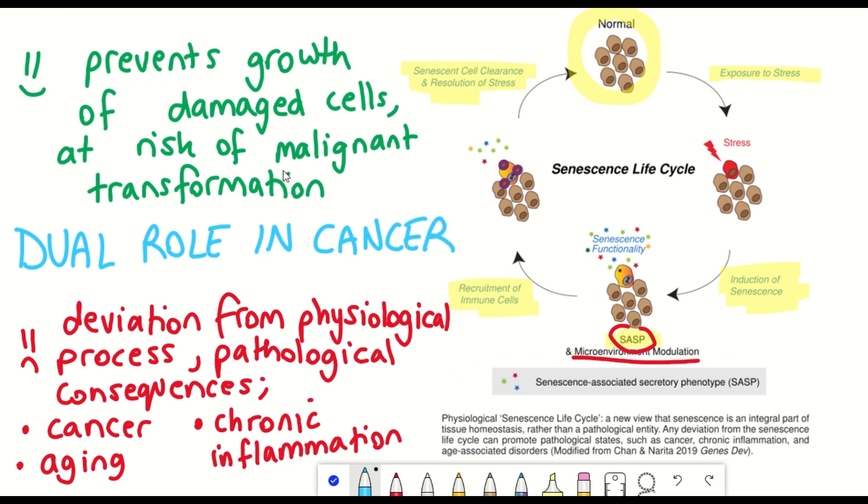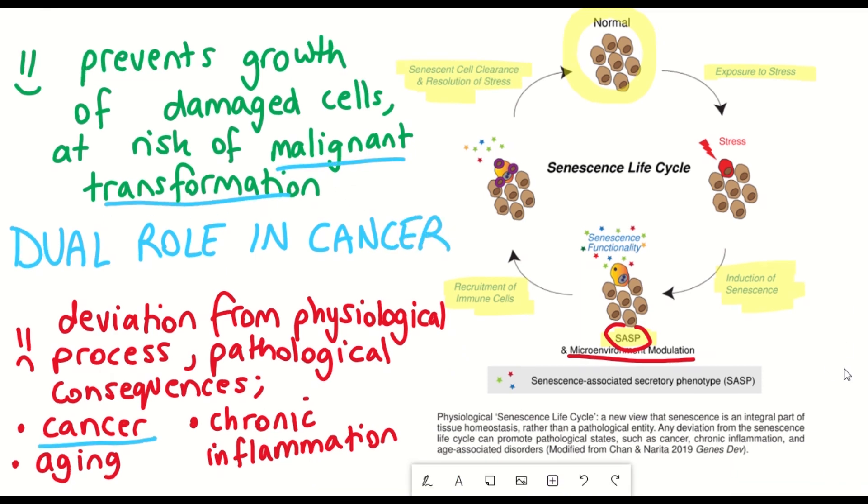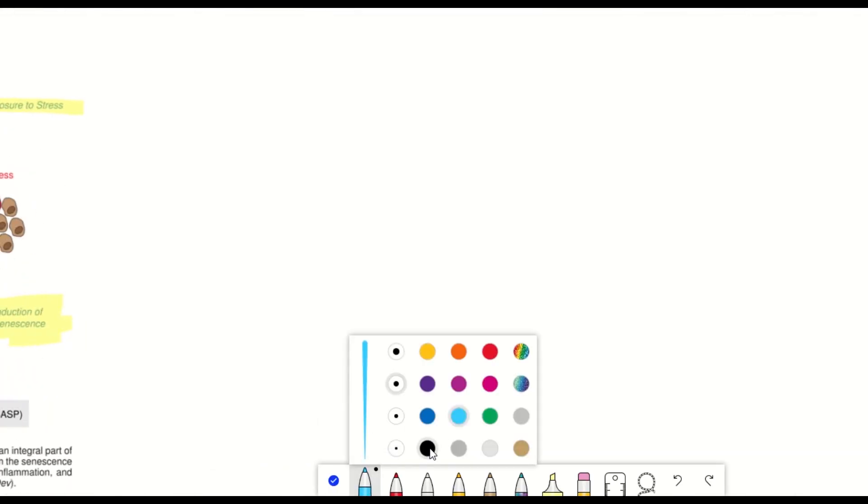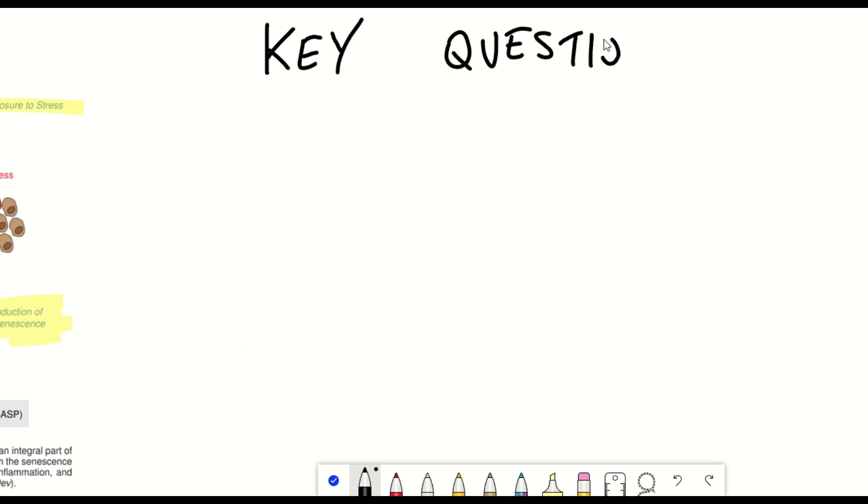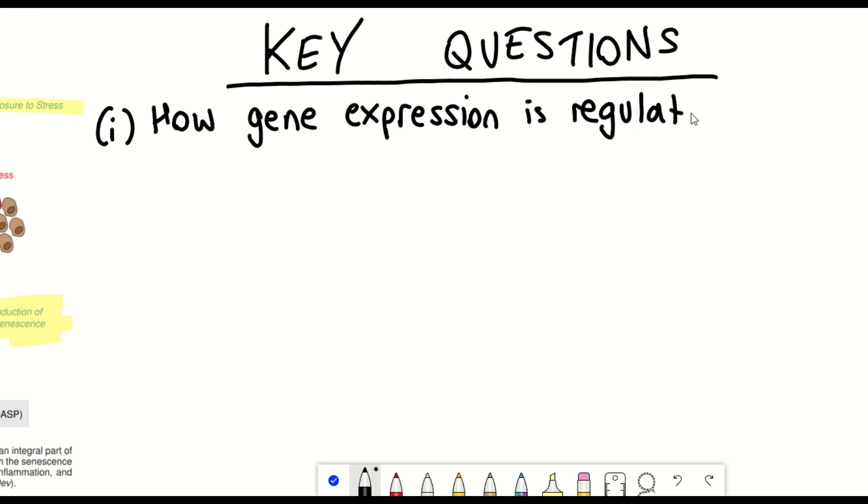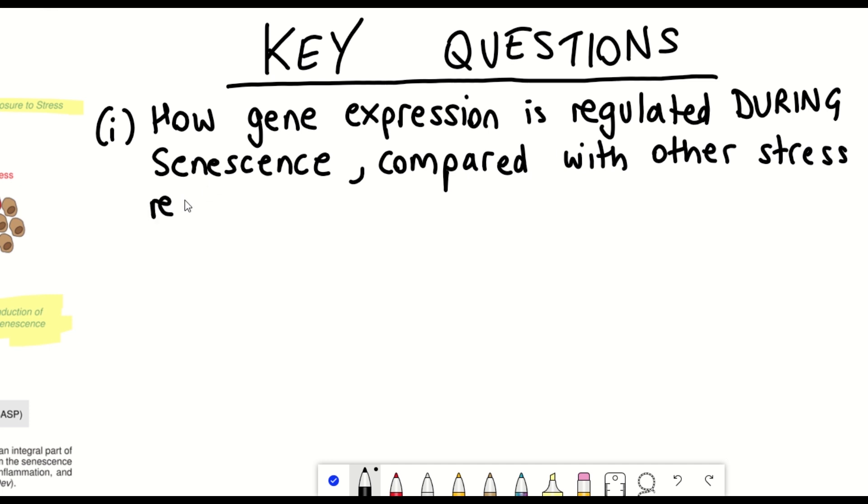Studying senescence is of great importance, and there are many different questions that we are trying to address within the lab. These include how gene expression is regulated during senescence compared with other stress responses. This can help with the identification of senescent cells and the development of senolytics, which are drugs that can remove and eliminate senescent cells.